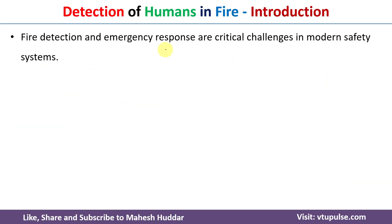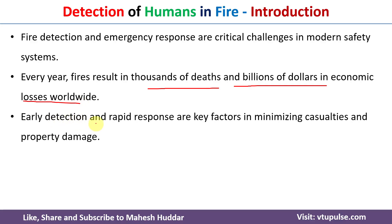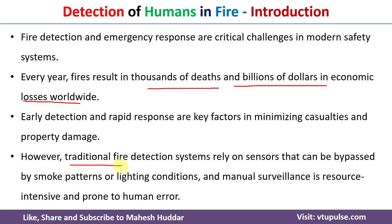Fire detection and emergency response are critical challenges in modern safety systems. Every year, fire results in thousands of deaths and millions of dollars in economic losses worldwide. Early detection and rapid response are key factors in minimizing casualties and property damage. Traditional fire detection systems rely on sensors that can be bypassed by smoke patterns, and manual surveillance requires more resources and is prone to human error.